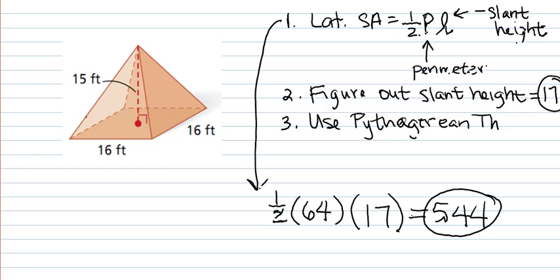Total surface area means that we're now going to include this square down here at the bottom. So if you want the total surface area, you've got to know the area of all these four triangles right here, and then you just add the square to the bottom, and you're done.